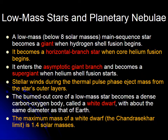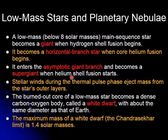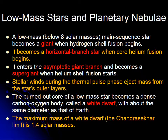For low mass stars — below 8 solar masses — the main sequence star becomes a giant during shell hydrogen fusion, a horizontal branch star during core helium fusion, and an asymptotic giant branch star during helium shell fusion. Stellar winds and thermal pulses then eject mass outward, producing a planetary nebula, and the leftover core becomes a white dwarf. The maximum mass for a white dwarf to exist is 1.4 solar masses.